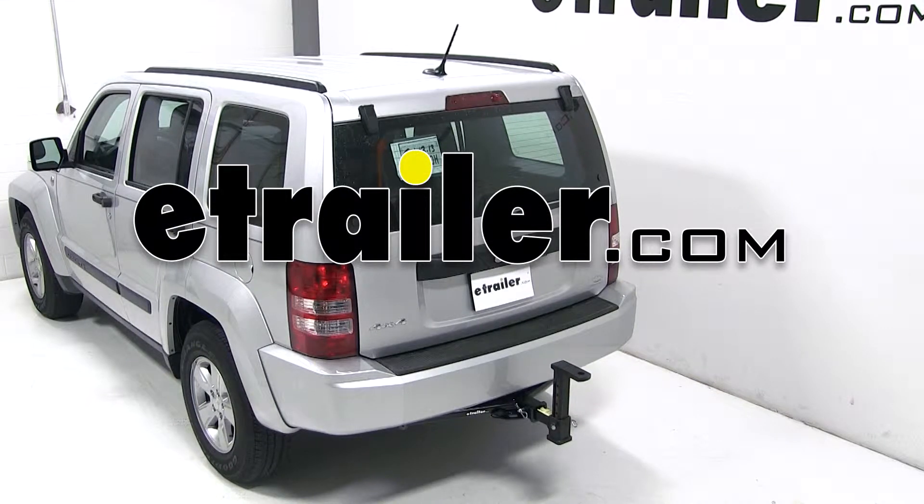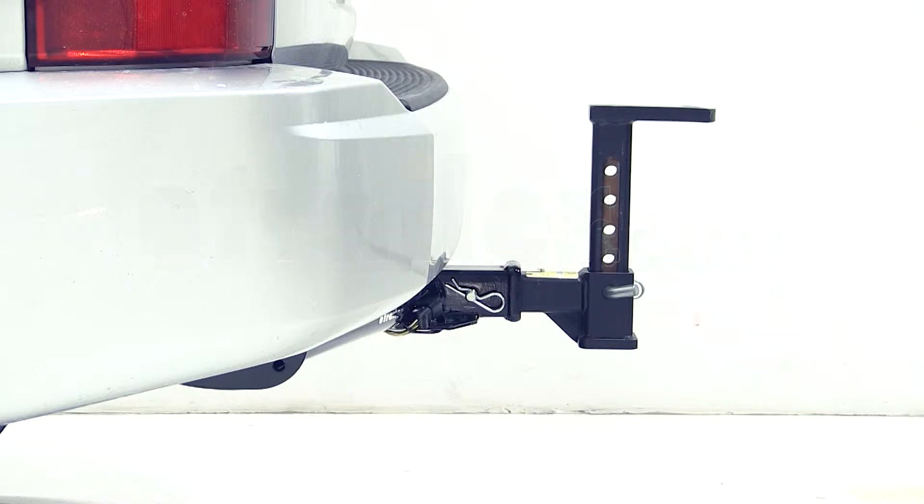Today on our 2012 Jeep Liberty, we'll be test fitting the convertible dual cushioned adjustable ball mount, part number CAB-UM.